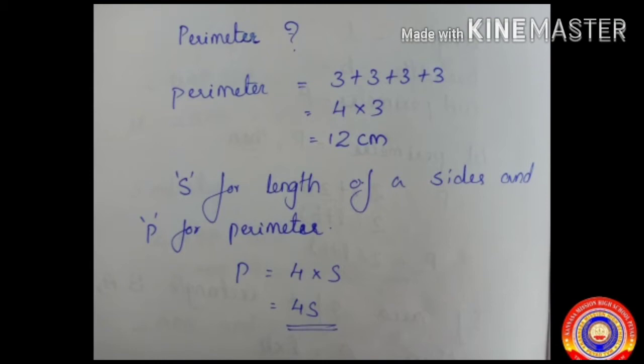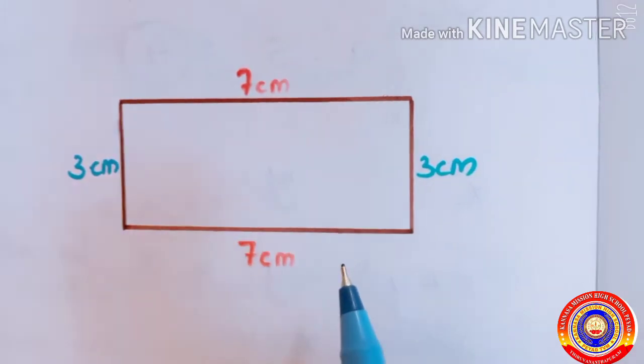Let's see how we wrote it in short form using letters. If we write S for the length of its sides of a square and P for the perimeter, then we can write P is equal to four into S, that is equal to 4S. Perimeter of a square is 4S. So what about a rectangle?